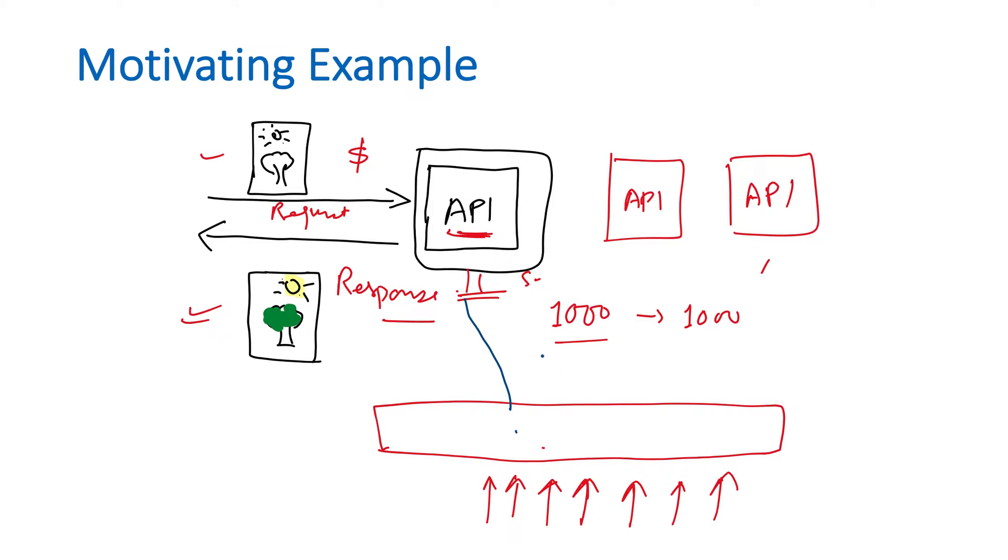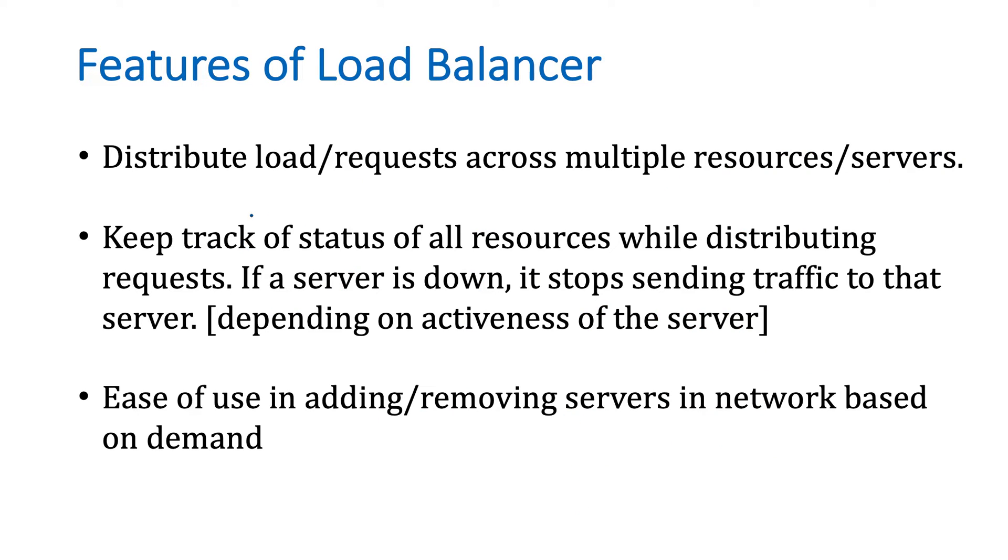You need some mechanism to distribute the load so that all of these computers have well-balanced load. If you have 1 million requests per second and 10 computers, then it should be approximately 100k requests per system, not exactly but close to that if all these systems are of similar power. That's why we need load balancing. We need some algorithm and mechanism to distribute the load evenly among different servers. That's why load balancing is very crucial in system design.